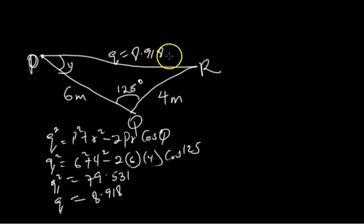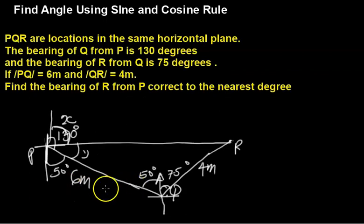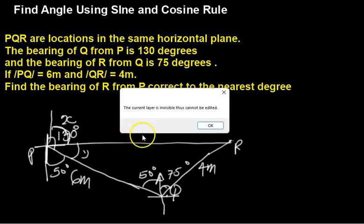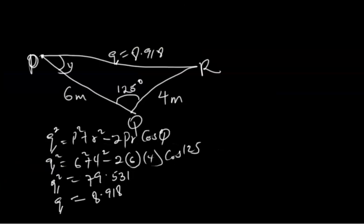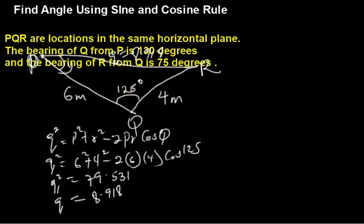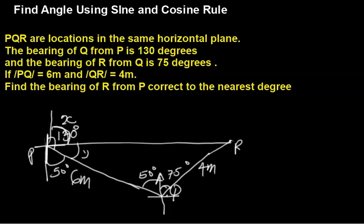So if Q equals 8.918, we can define for Y. Let's take a look once again at the main figure. Here, we know Y. We're actually interested in X, but we also need Y. And here, we have gotten this side of the triangle to be 8.918.